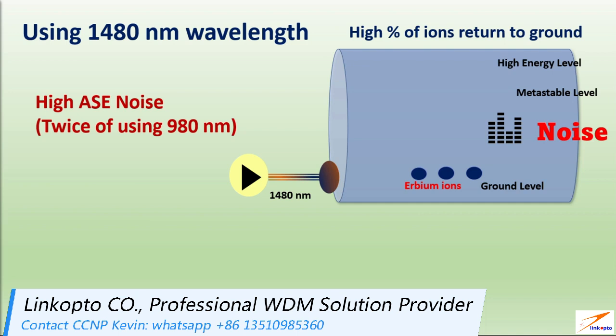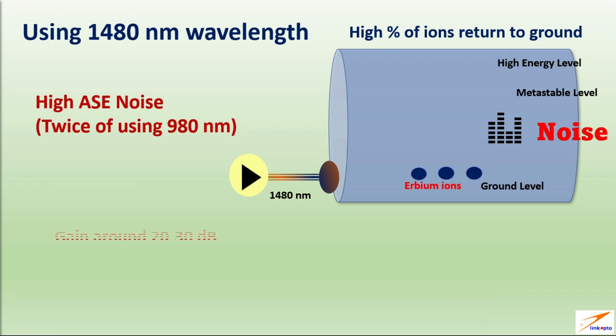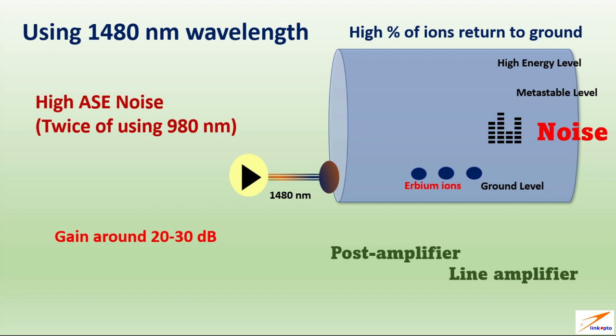As lots of ions dropped and produced lots of energy, having high gain around 20 to 30 dB. Due to high noise level, making this amplifier best suited to operate as post amplifier or inline amplifier. Also can use in cascaded configuration.